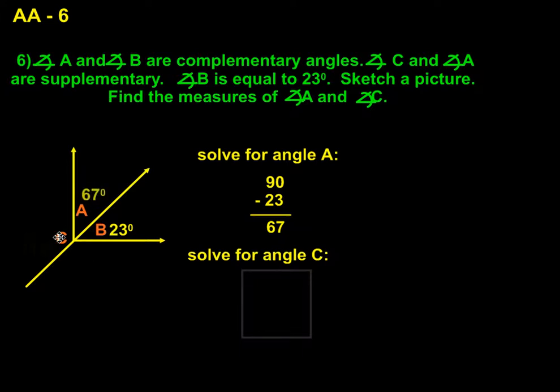Once I know A, it's easy to find C, because I know these are supplementary. And if I subtract 67 from 180, I get 113 degrees, which would be the value for C.